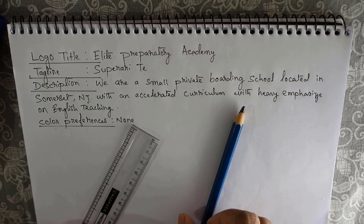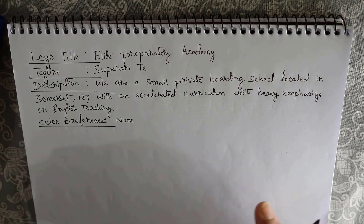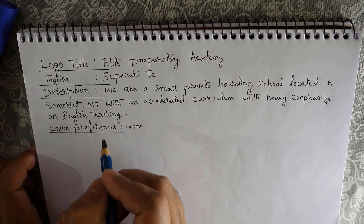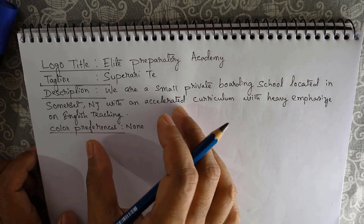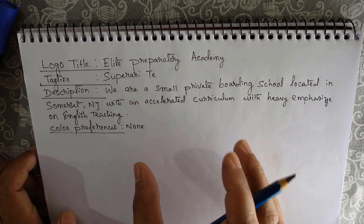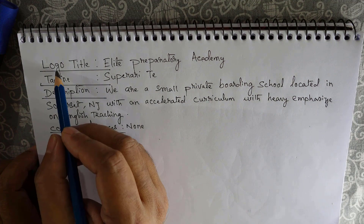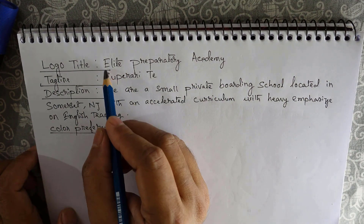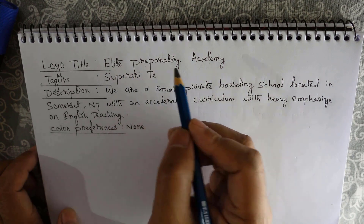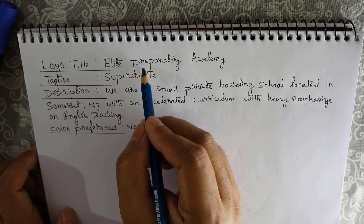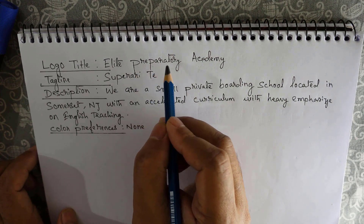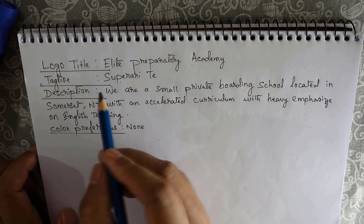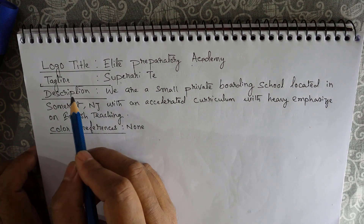Hi, welcome to Graphic Island Tutorial. Today we will create a new logo by following a customer description. Here are the details given by the client, and according to that we'll develop a new logo. The logo title given is Elite Preparatory Academy, so this logo title itself is saying that it's an educational logo for a junior student academy, and here is the tagline.